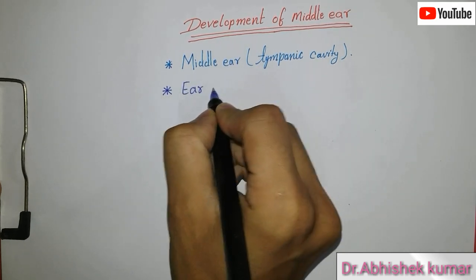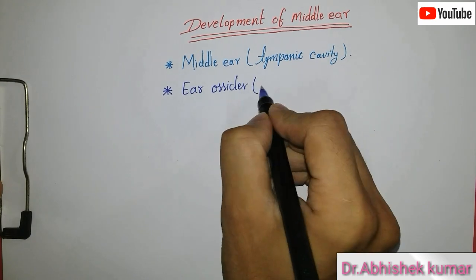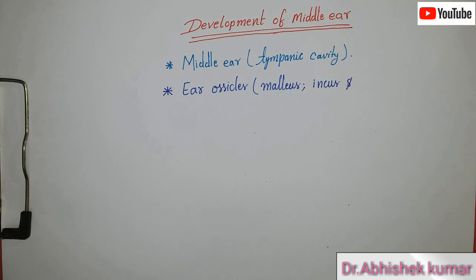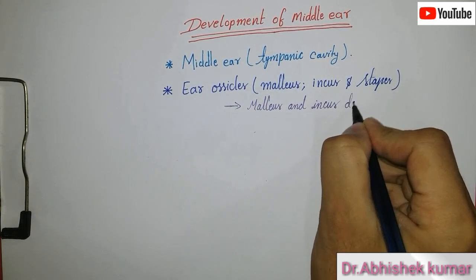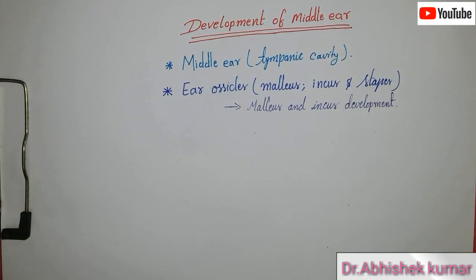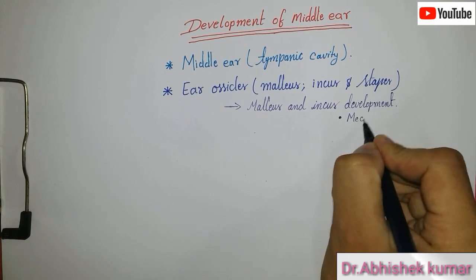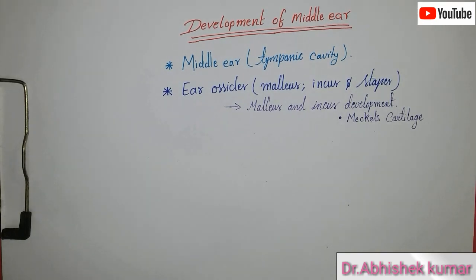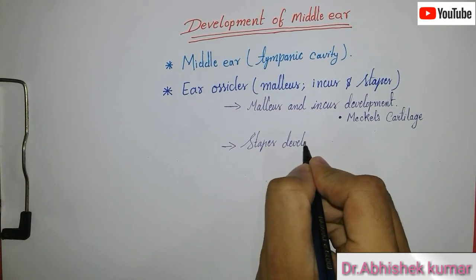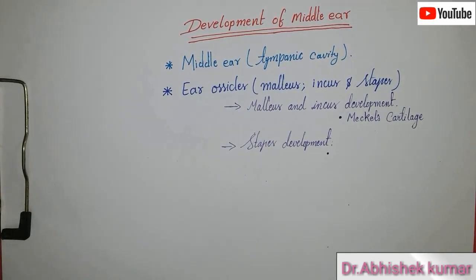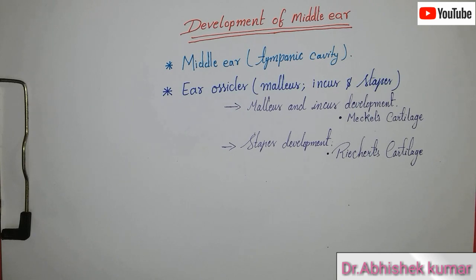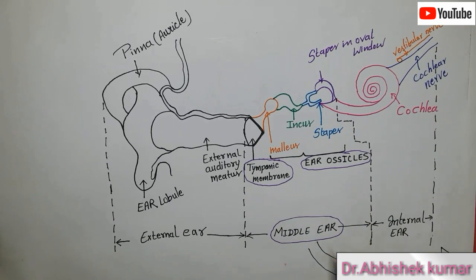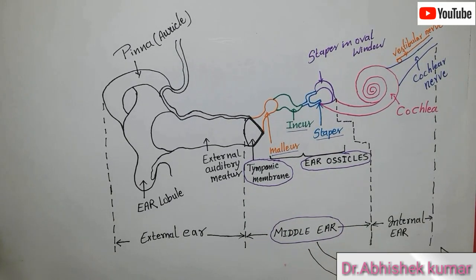Now, ear ossicles — when we say ear ossicles it represents the three tiny bones: malleus, incus, and stapes. The first two, malleus and incus, develop from the cartilage of the first pharyngeal arch, also known as Meckel's cartilage. The third one, stapes, develops from the cartilage of the second pharyngeal arch, known as Reichert's cartilage. You can see the adult derivatives — malleus, incus, and stapes — present in the middle ear.